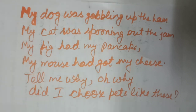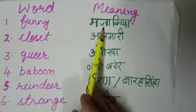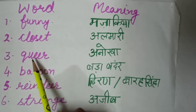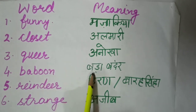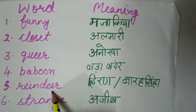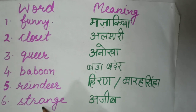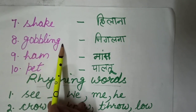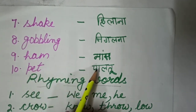Now in the next series I am taking word meanings. Funny — F-U-N-N-Y — means majaakiya. Closet — C-L-O-S-E-T — means almaari. Queer — Q-U-E-E-R — means anokha. Baboon — B-A-B-O-O-N — means bada bandar. Reindeer — R-E-I-N-D-E-E-R — means a type of deer. Strange — S-T-R-A-N-G-E — means ajeeb. Shake — S-H-A-K-E — means hilana. Gobbling — G-O-B-B-L-I-N-G — means nigalna. Ham — H-A-M — means maas. Pet — P-E-T — means paltu.